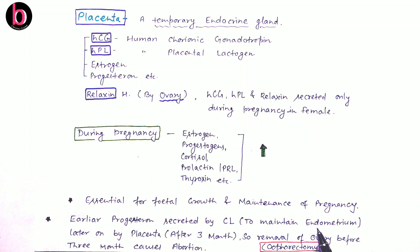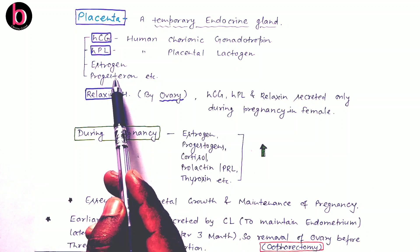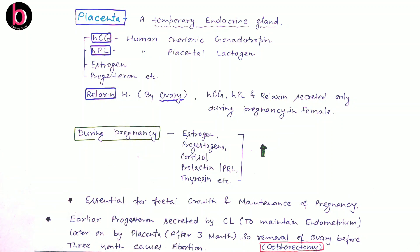Progesterone, also known as the pregnancy hormone, is needed for maintenance of the endometrium. In the first three months of pregnancy, the placenta is responsible for secretion of progesterone; until the placenta is fully developed, the corpus luteum is the structure responsible for secretion. Corpus luteum is present inside the ovary, so if the ovary is removed in the first three months — a procedure known as oophorectomy — this may cause abortion.